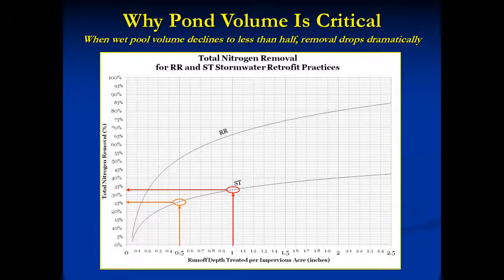This graph is from the Chesapeake Bay Program's guidance for stormwater pollutant removal. Ponds belong to a group of BMPs known as stormwater treatment, or ST measures. A pond that stores the first half inch of runoff from impervious surfaces captures about 25% of the nitrogen entrained in that runoff. Most ponds are designed to store an inch of runoff when new, and such a pond captures 33% of the nitrogen. So as storage declines, so does pollutant removal.